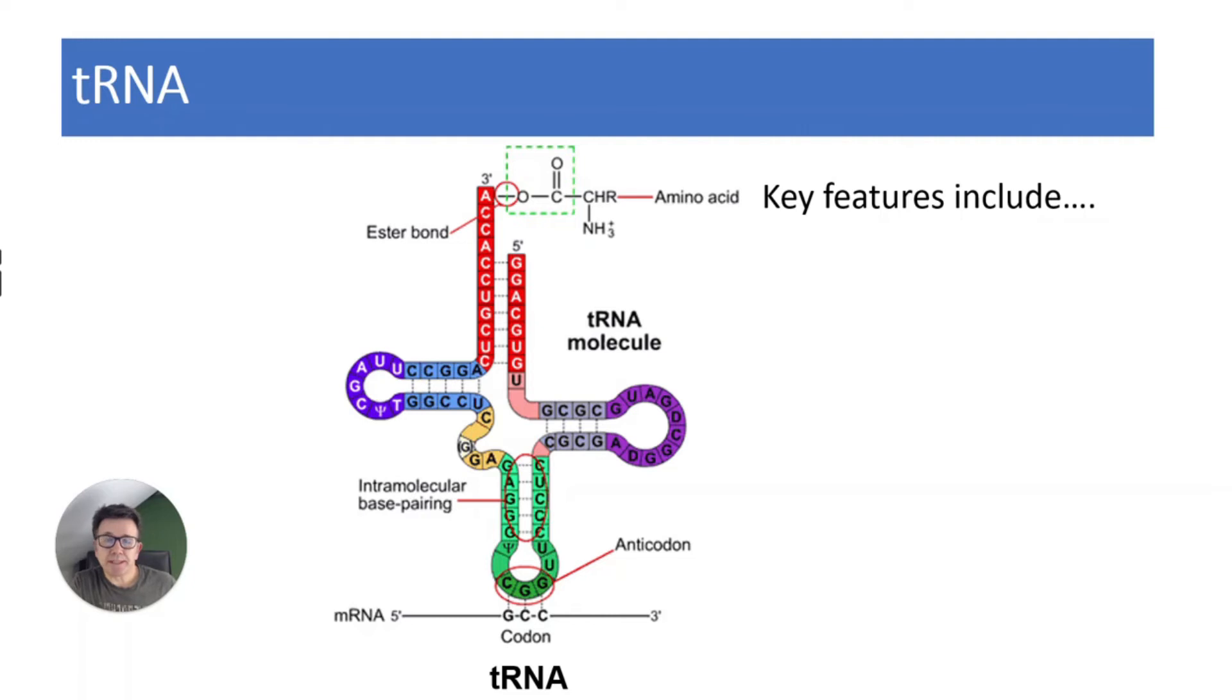The next molecule is tRNA. tRNA is very important in the translation of the mRNA code to allow amino acids to be joined together to form polypeptides and proteins. You tend to find them in the cytoplasm, in the ribosome, bringing the amino acids to the ribosome to join together and create proteins.